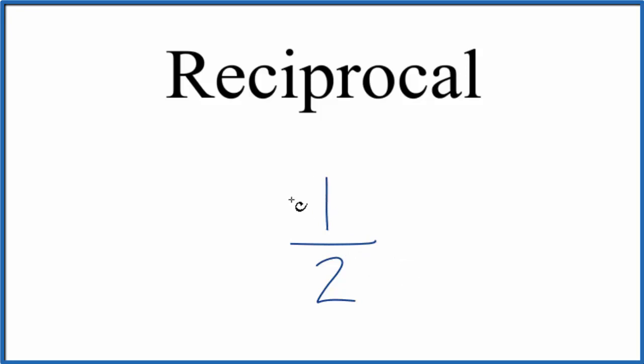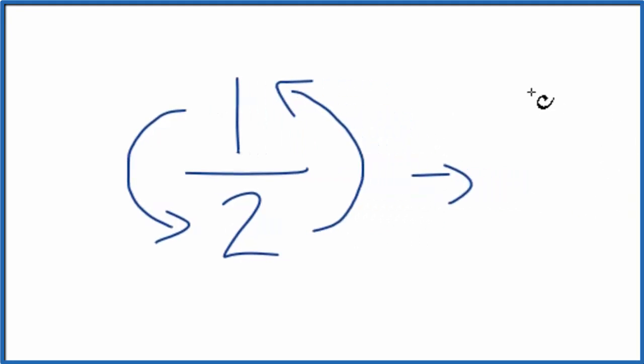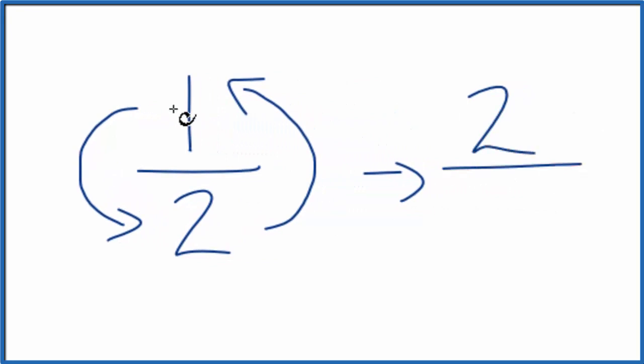And the way we can figure this out, we can take the 1, that numerator, move it down to the bottom, take the denominator, and move it to the top. So when we do that, we end up with 2 on top, and then the 1 that went down to the bottom. So the reciprocal for 1 half is 2 over 1.